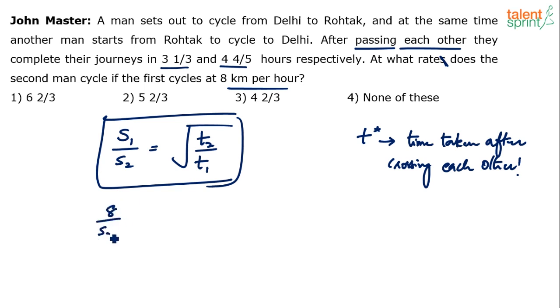So, 8 divided by S2 equals the square root of the ratio. Time taken by the second person after crossing is 4⅘, which equals 24/5. And 3⅓ is what? We get 10/3.